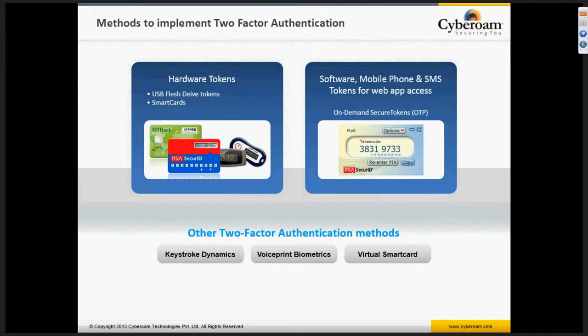A very typical example of two-factor authentication: you would normally access your internet banking account from your location, and the bank tracks the IP addresses from where the website is being accessed. The moment you change your location, the system identifies that the request is received from another location and might possibly be identity theft. It then gives you a prompt for a one-time automatically generated password or PIN, which is sent to your registered email address or registered mobile phone. Once you have that unique combination of passwords, you are able to access your internet banking account.